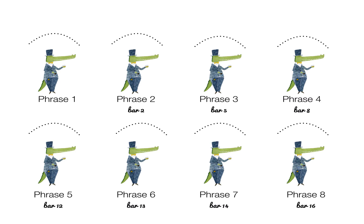Here are the eight phrases — I'm going to play each phrase in turn, and I'm going to leave this slide here so that you get to see exactly where those phrases are occurring. Here is phrase one... phrase two... phrase three... phrase four... phrases five and six... phrase seven... and finally, phrase eight.